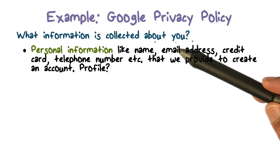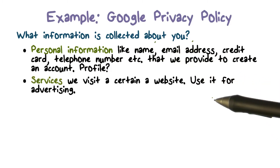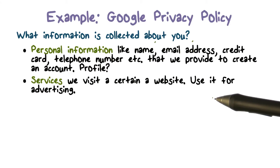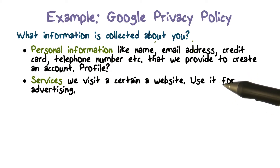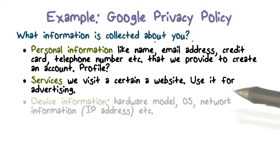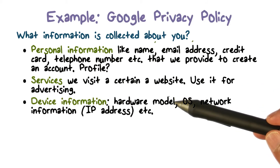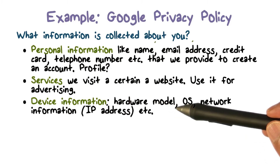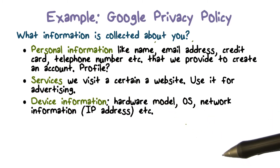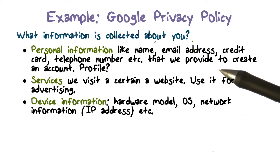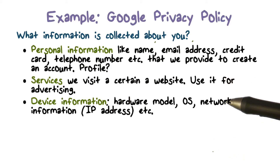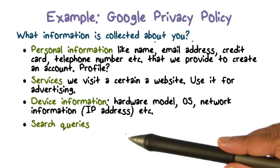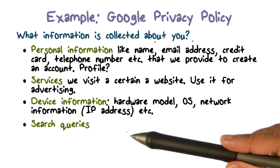When we visit certain websites or use Google services, Google will know about it and can track and record it. Google's business model is that they use it for advertising. They also have information about your device — what kind of hardware it is, the operating system it's running, its IP address, network information, and so on. They would also know your search queries, what kind of things you look for on the internet, and what kind of information you're interested in.